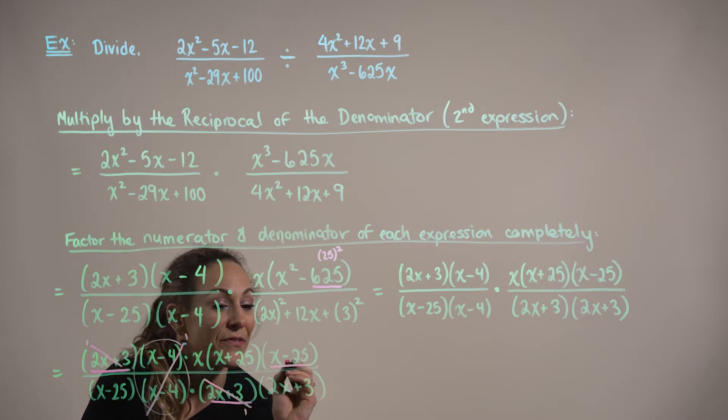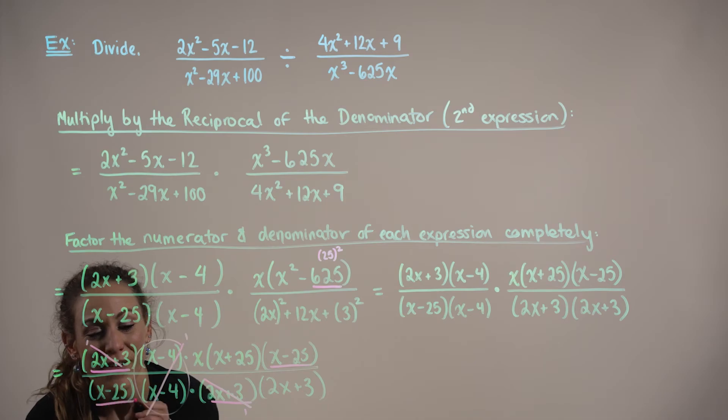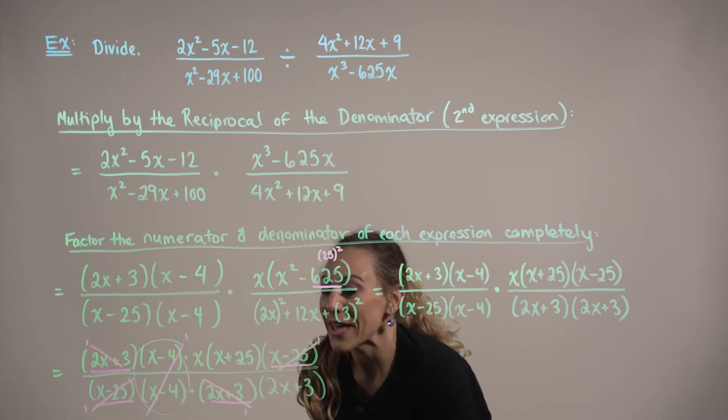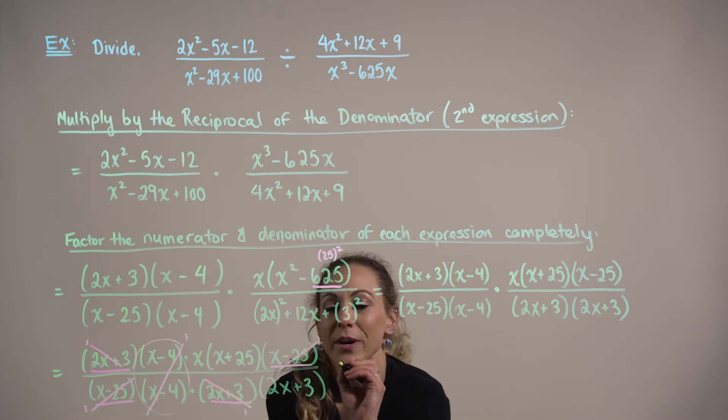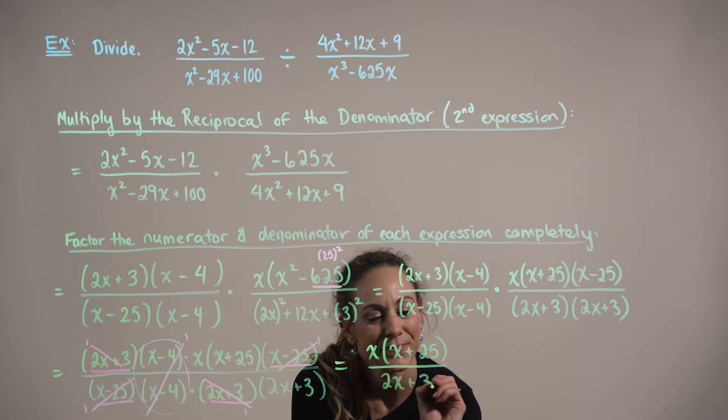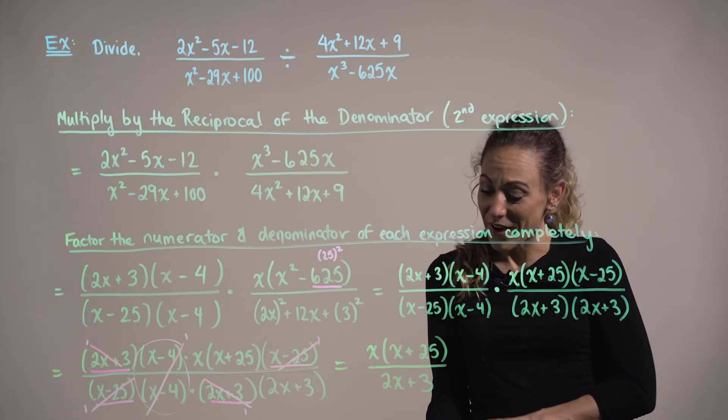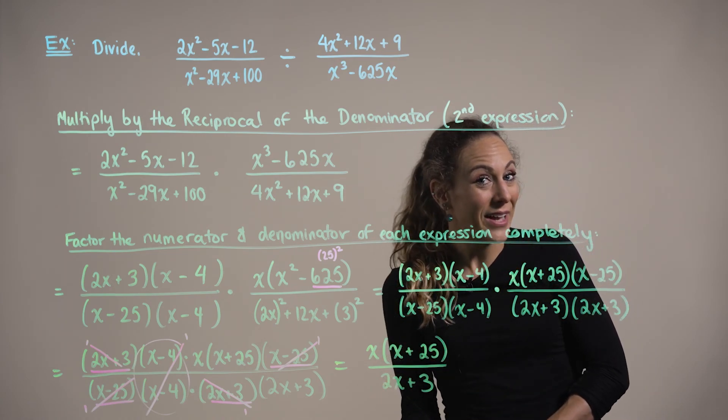And we have another common factor, x minus 25, again, both in the numerator and denominator. So canceling all those like terms, we are left with our simplified rational expression, x times x plus 25, all divided by 2x plus 3.